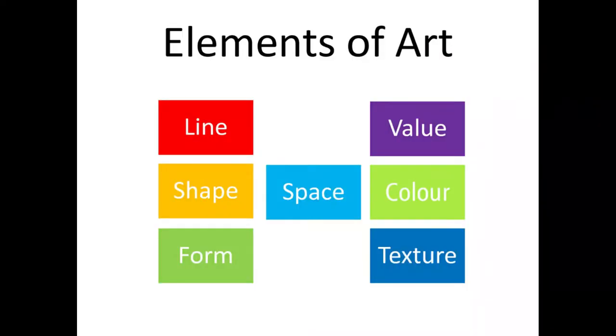We're going to incorporate the elements of art in this project. The elements of art are what make up an artwork. They consist of line, shape, form, space, value, colour and texture. We're going to be concentrating on shape and value in this project. Value means how light or how dark a tint or tone is in your picture.